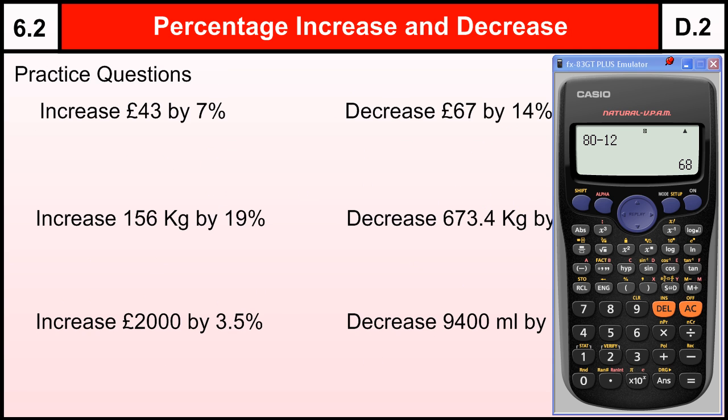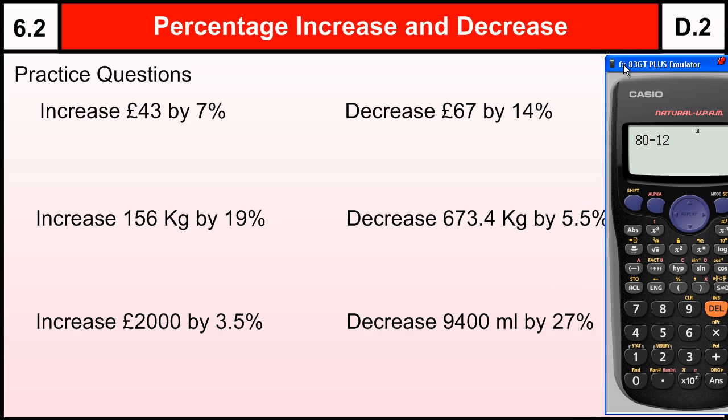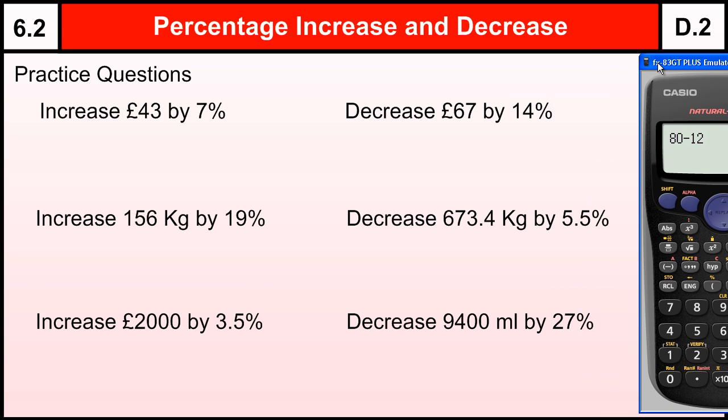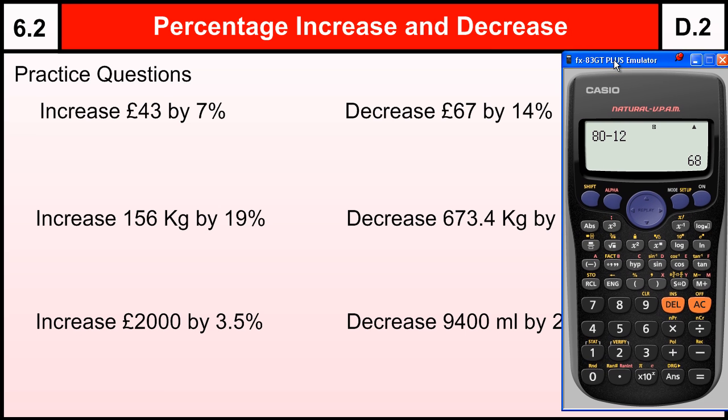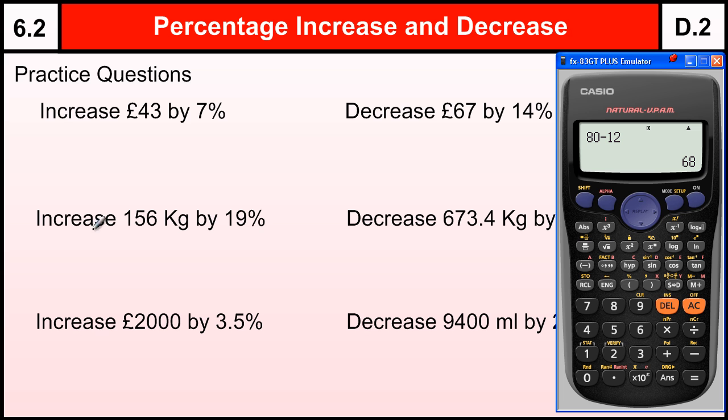Let's go through some examples of that. Some practice questions. If you want to stop the video and have a go at these, then I'll just go through the answers afterwards quickly. Going through these quite quickly, you'll do the increases first. £43 by 7%. So I do 7 divided by 100 to work out that 7% as a decimal times by 43.